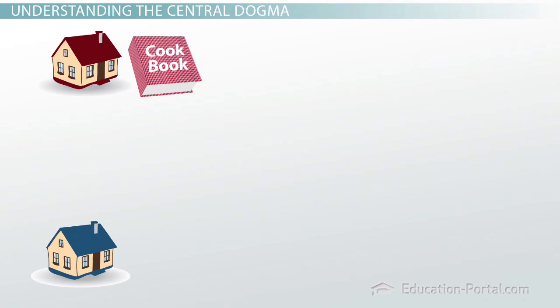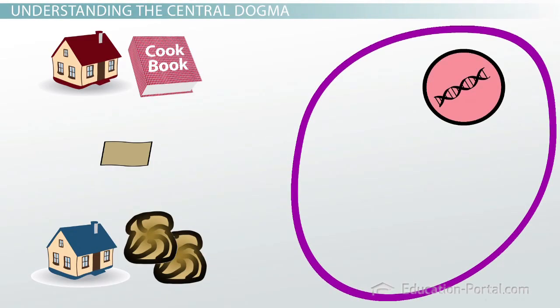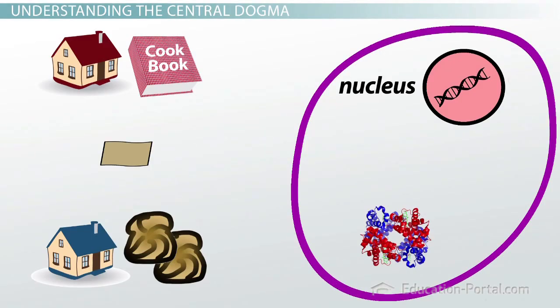That was because my mom couldn't give me her giant cookbook. My home, the place where I actually made the French toast, was too far away for me to read her cookbook, so I needed a copy to take with me. In the same way, the place where DNA lives is really far away from the place where proteins are actually made. DNA lives inside the nucleus of a cell, and proteins are made outside the nucleus in the cytoplasm.